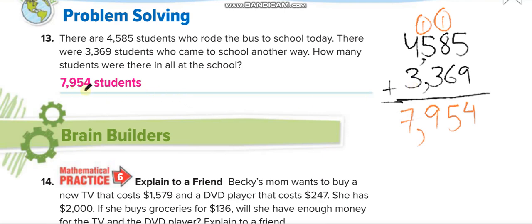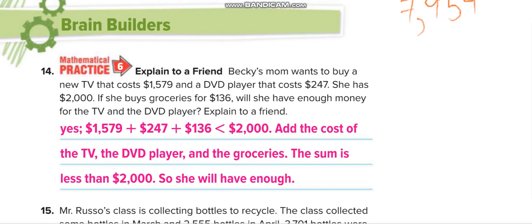Becky's mom wants to buy a new TV that costs $1,579 and a DVD player that costs $247. She has a total of $2,000. Can she buy all these things if she buys groceries for $136? We will add these three numbers and then check if it's more than $2,000.